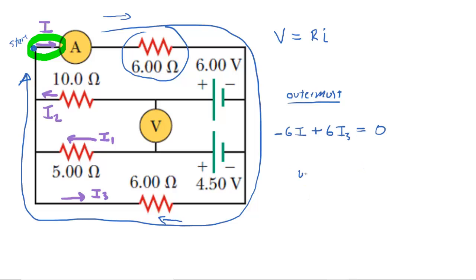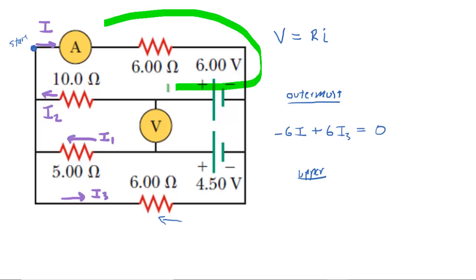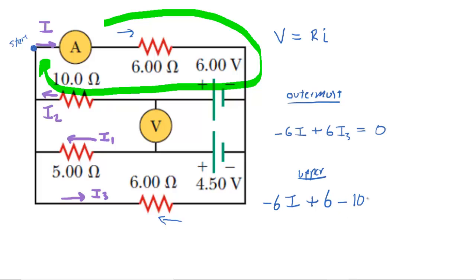We next examine the upper loop. Going clockwise around this upper loop, the first potential change is again negative six I through the six-ohm resistor. We then encounter a battery going from negative to positive plate, which is a positive potential change of positive 6 volts. Then we encounter the 10-ohm resistor, and we're going with the current marked I2, so that's a negative potential change of negative 10 times I2. Setting everything equal to zero gives us our second loop equation.